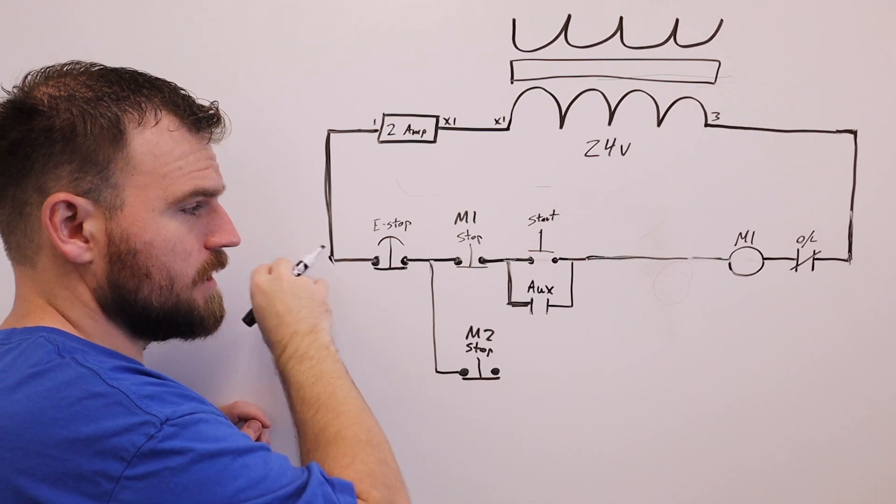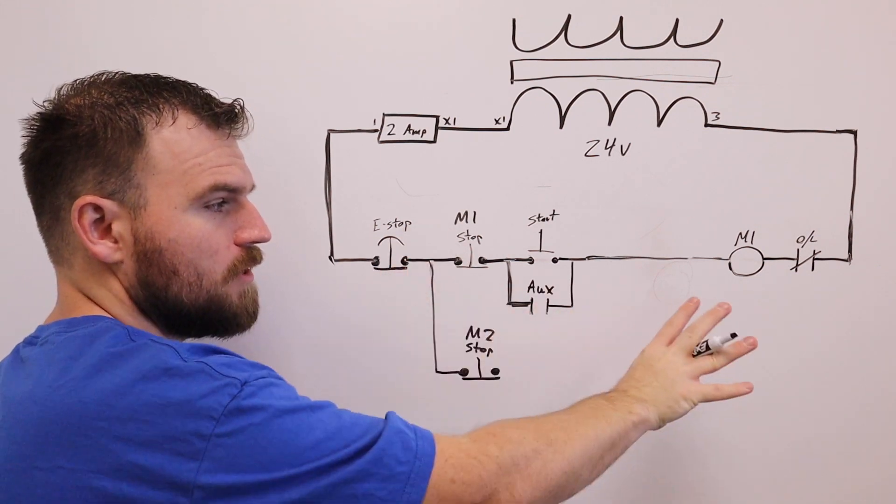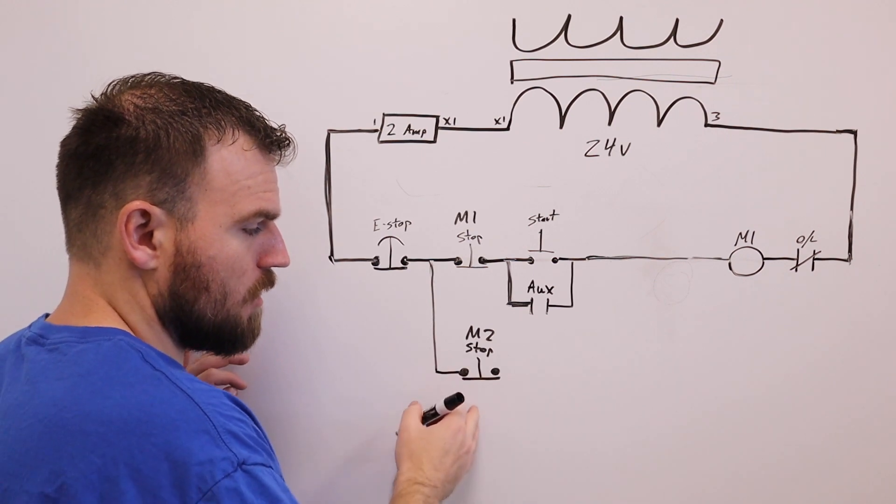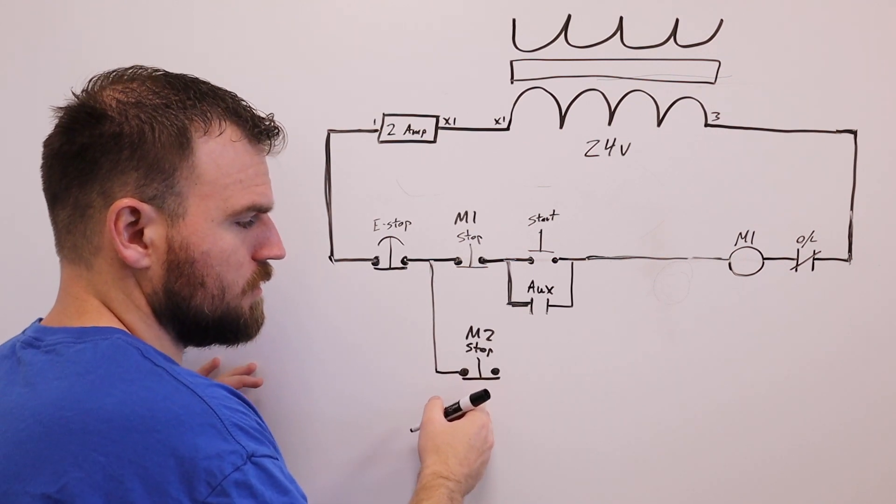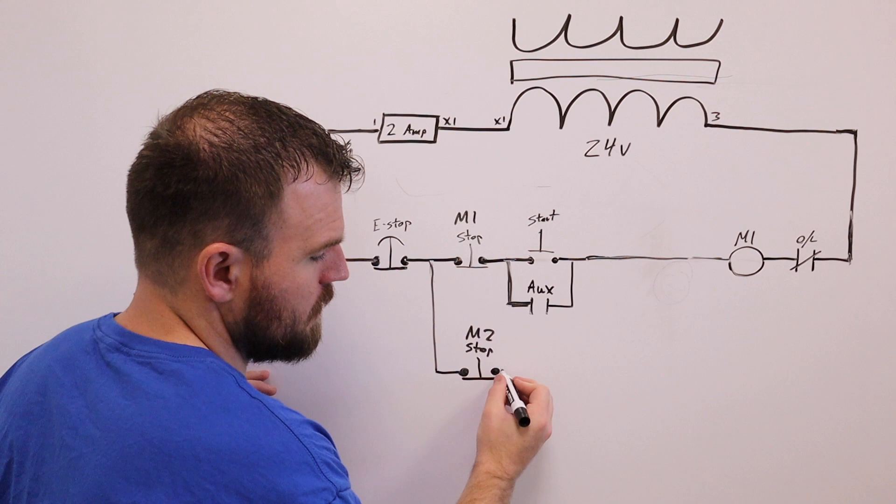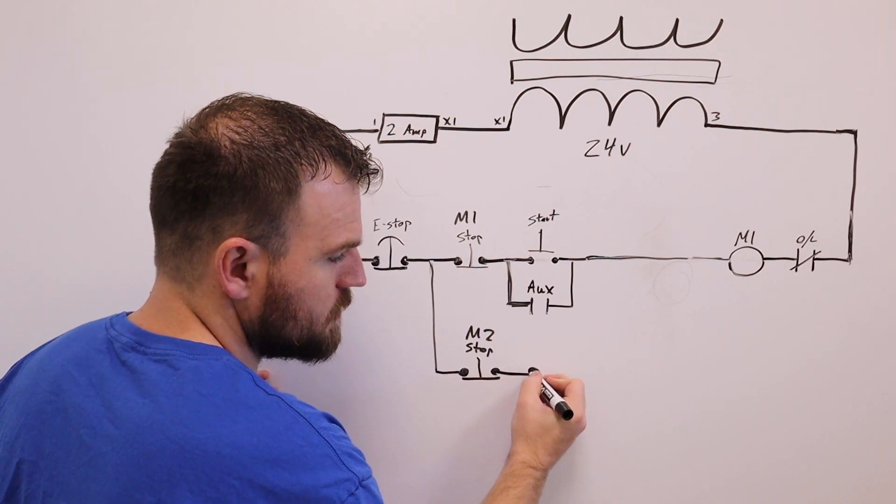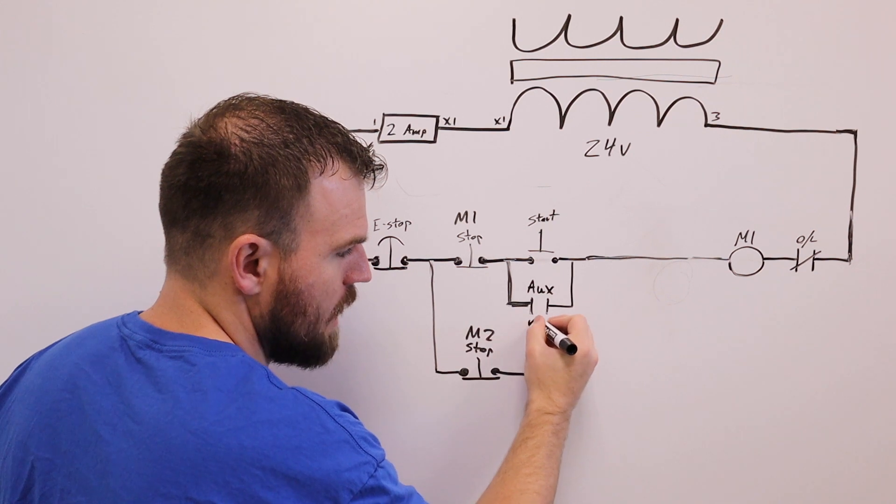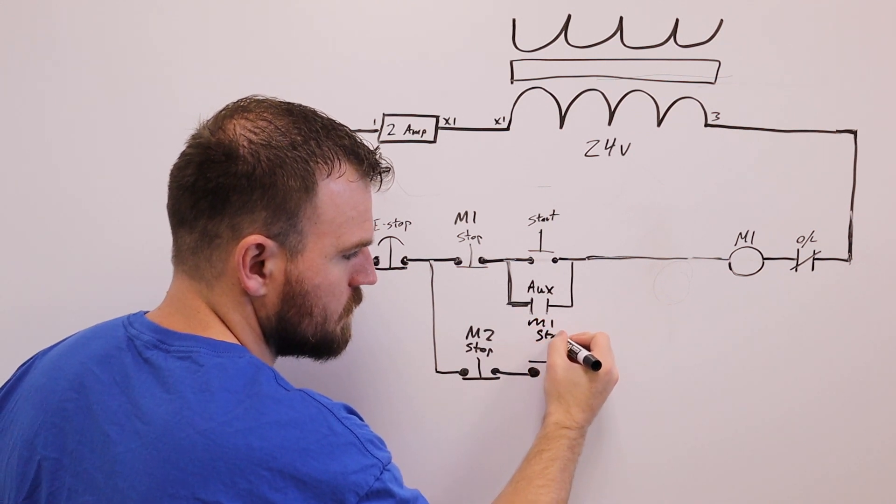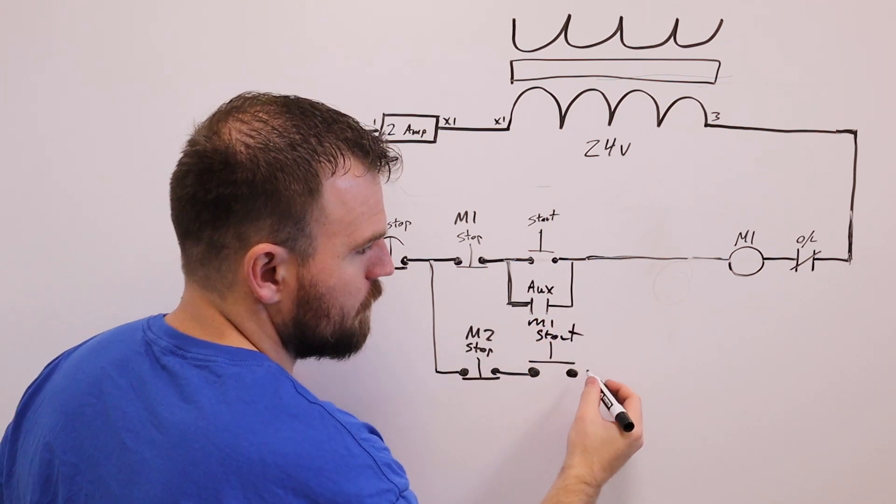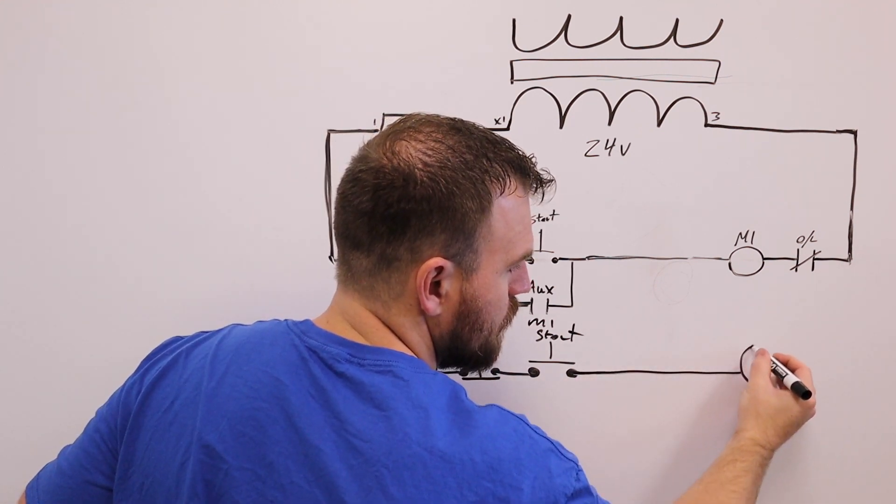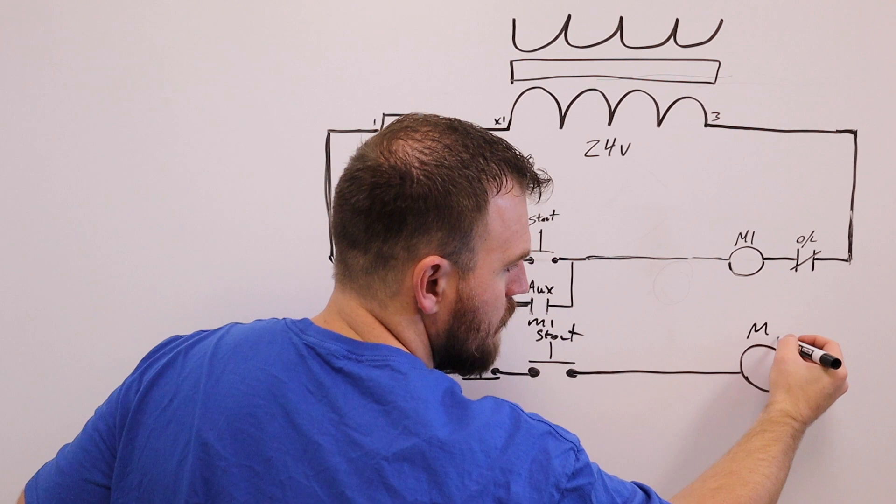Like I said, if we press this e-stop, it's going to kill the circuit for both of these motor controls that we're building. The next thing we're going to do in our M2 run is come in with our start switch, just like so. We'll just put M1 start, and then we're going to go over into another motor coil, and this one we'll put M2 on.